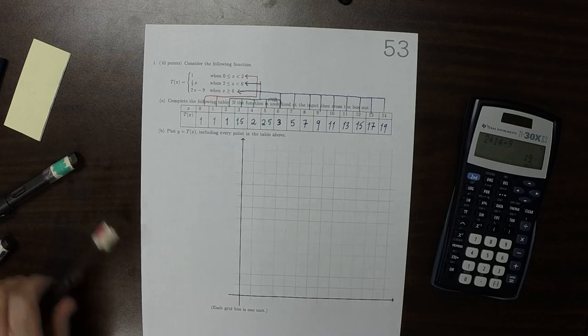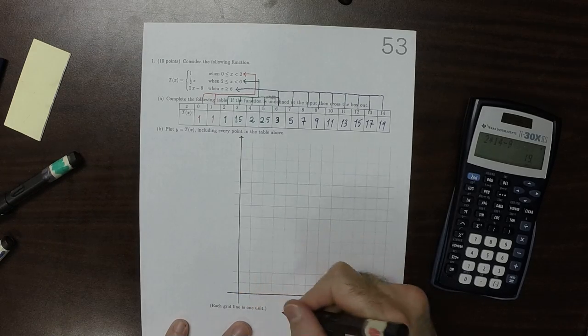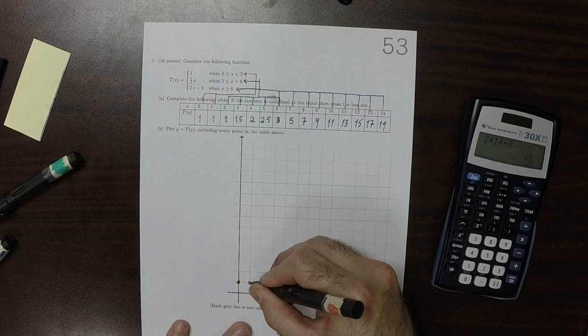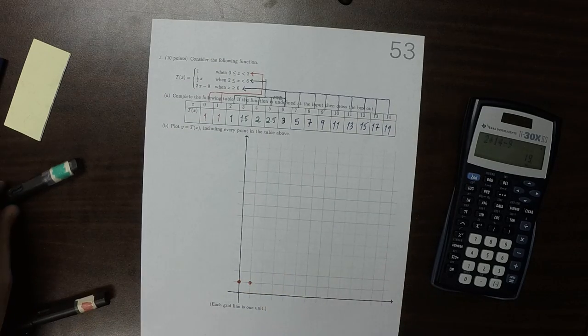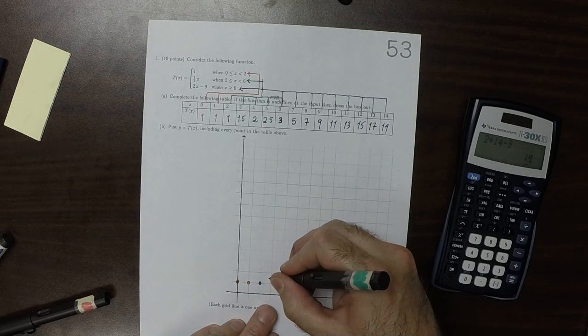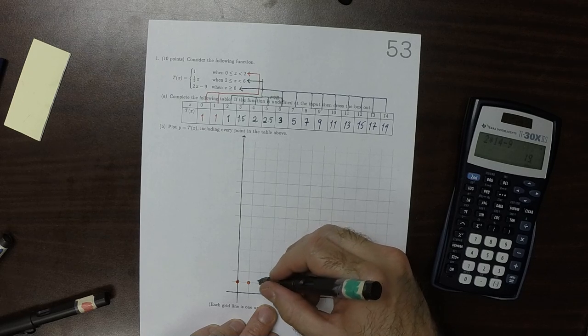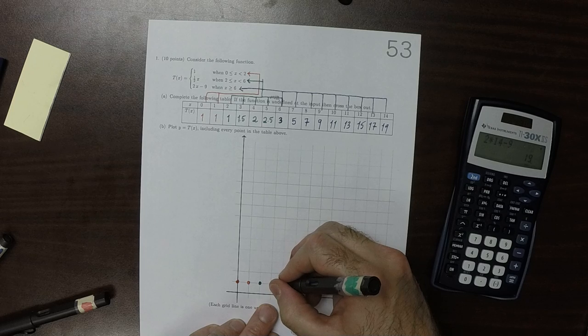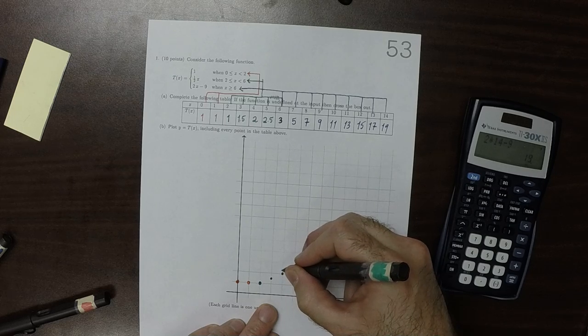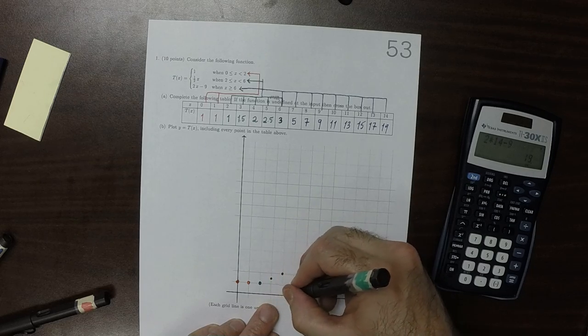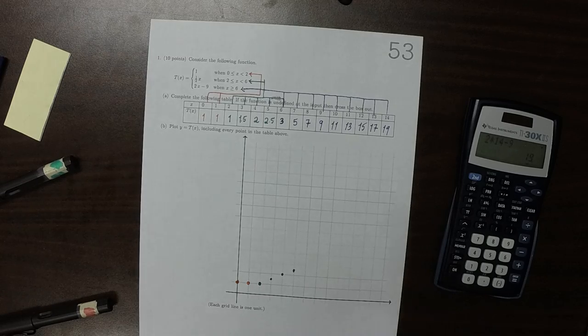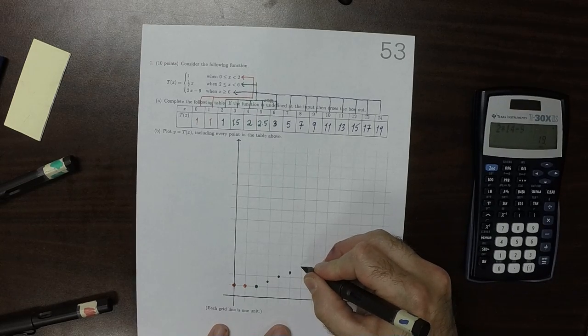So let's plot. Each grid line is 1 unit. So red point, red point. Green point at 2. At 3 it's 1.5. At 4 it's 2. At 5 it's 2.5.